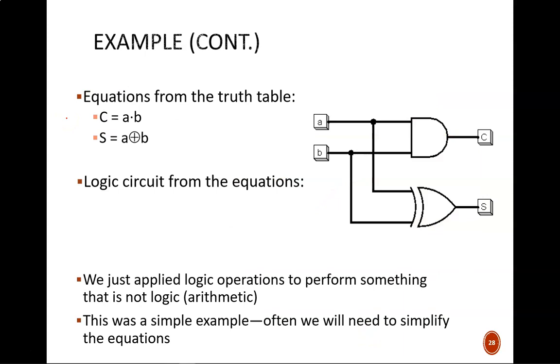Sure enough, we can translate the logic from the truth table into these Boolean equations. C equals A and B. S equals A exclusive OR B. From those equations, we can draw a logic circuit using the appropriate gates. And if we had a physical breadboard, we could easily build this adder in real life.